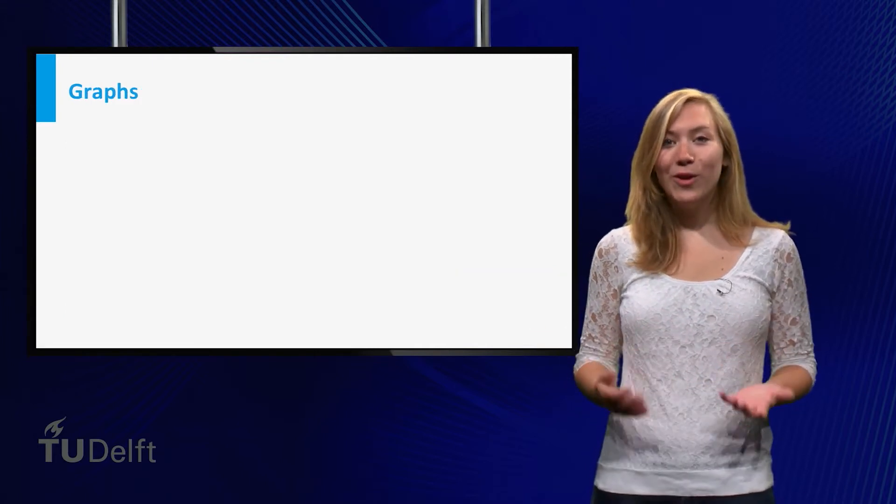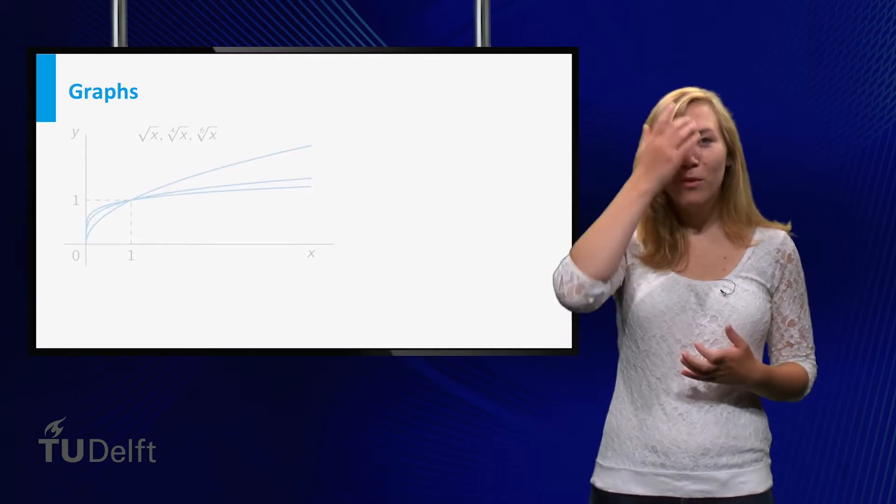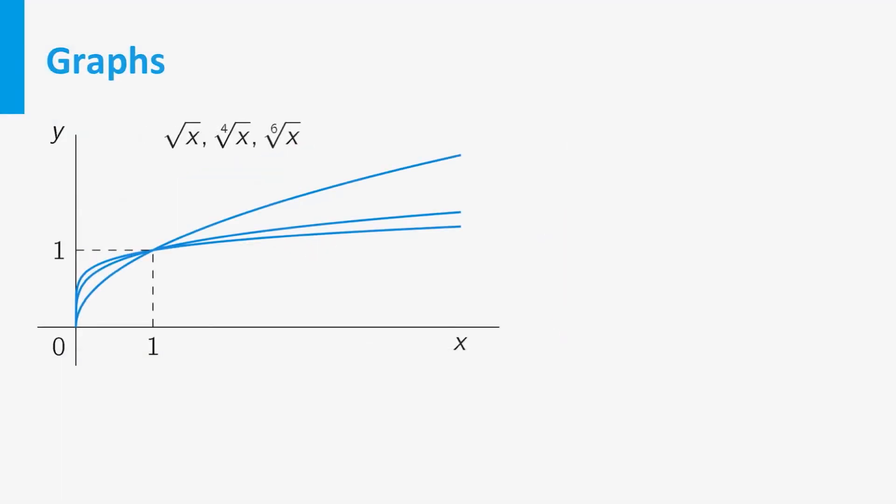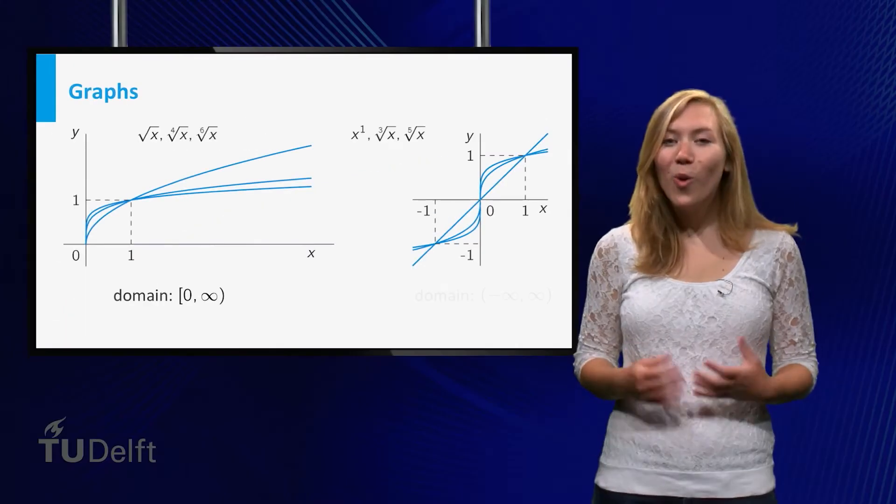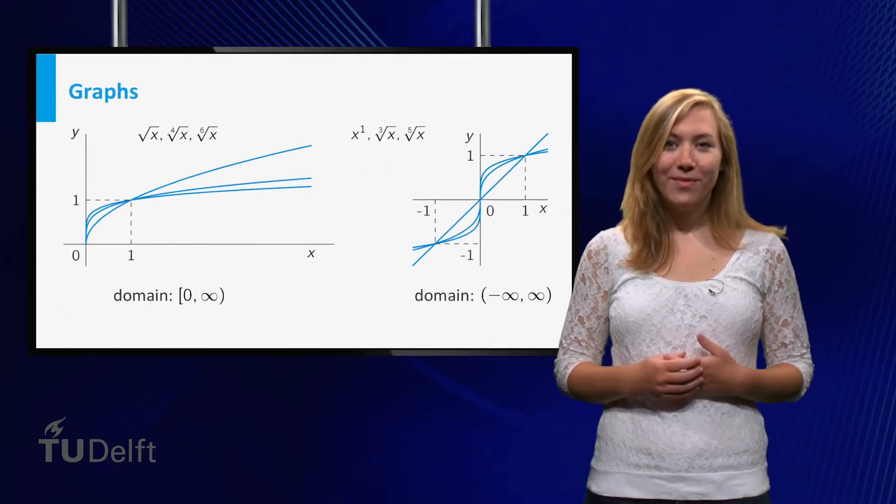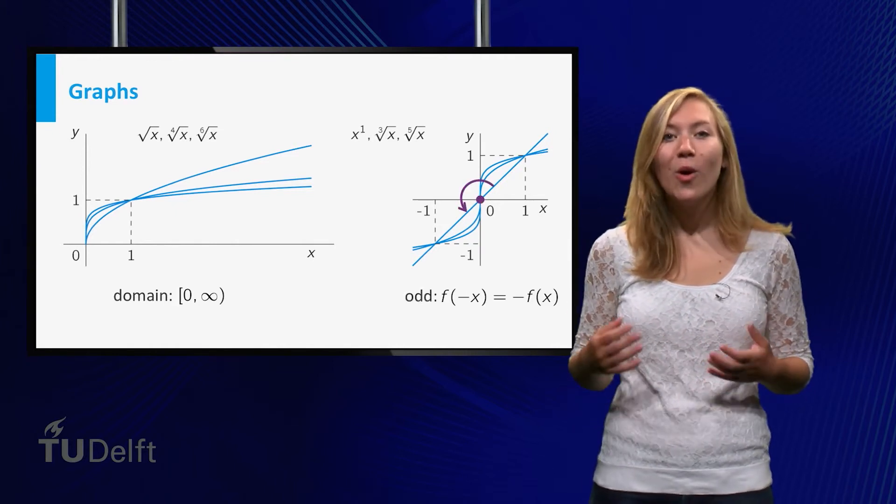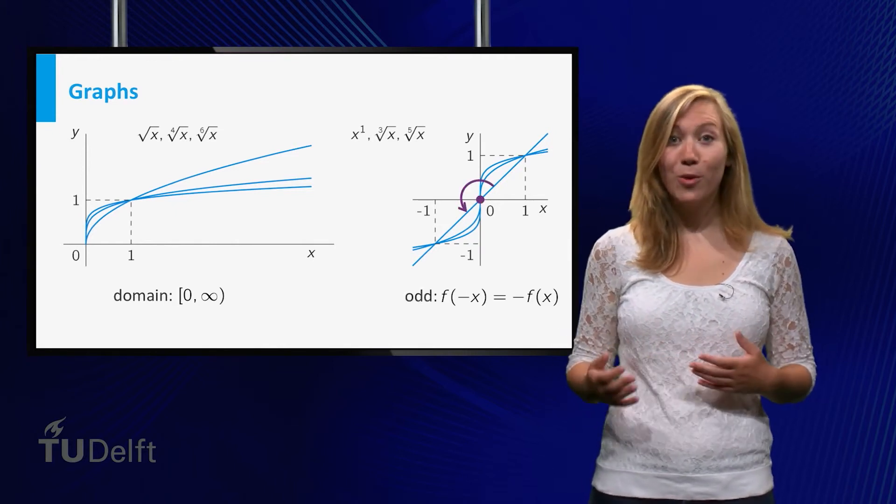Let us look at the graphs of these power functions. For even values of n the graphs look quite similar. These functions are only defined for non-negative values of x. For odd values of n the graphs look quite similar too, and are defined for all real values of x. These graphs are also point symmetric in the origin.